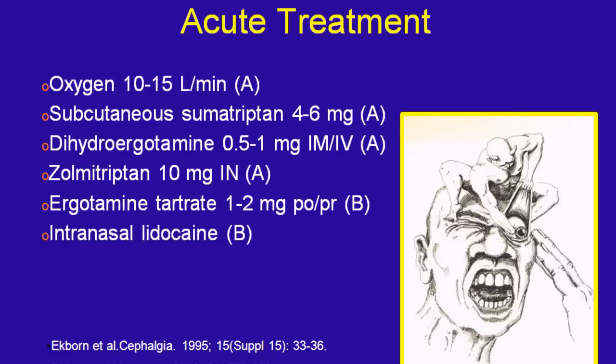Treatment for cluster headache: oxygen. We recommend 10 to 15 liters per minute with a non-rebreather mask for about 10 to 15 minutes. You can prescribe oxygen — they get a tank delivered to their house, get a headache, put on the oxygen, and it takes care of it. It has to be the big tanks because you can burn through a small tank quickly. Imitrex or sumatriptan is also very helpful — the injection is best because it acts quickly. Pills take 30 to 45 minutes and the headache is well on its way by then.